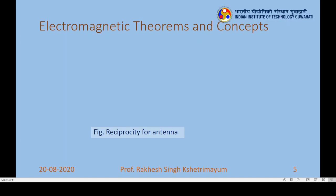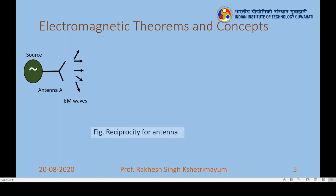We can also pictorially describe this reciprocity theorem for antennas. Antenna A is a passive device — you give it a microwave source or RF source (an EMF), and it starts radiating fields everywhere in space as EM waves. Somewhere in space we have antenna B, which picks up these EM waves from antenna A. Because of this incident field, current is induced in antenna B, and that current can be measured with an ammeter. This is the first experimental setup.